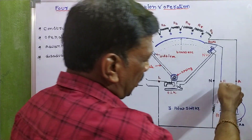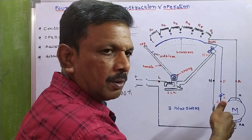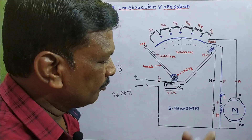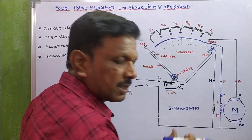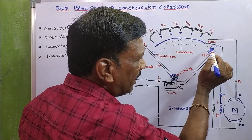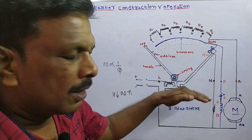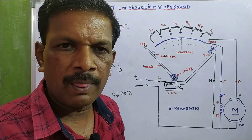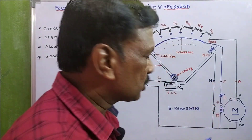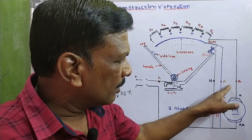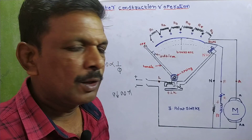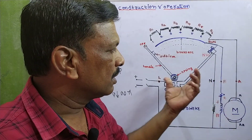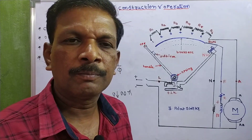If you change the speed, whatever the speed, the NVC is independent of the field. With the help of this resistance we set the current in the NVC coil. If you want to change the current in the NVC, we change the resistance. The four points are: L is the line, A is the armature, F is the field, and N is the neutral position. This starter is called the four-point starter.